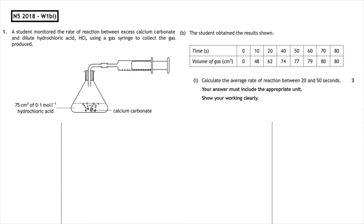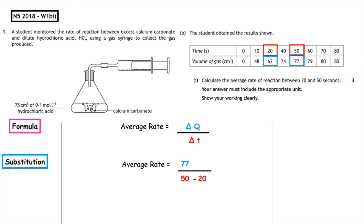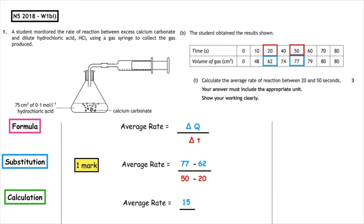This past paper question is from National 5, 2018, written 1B part one. Calculate the average rate of reaction between 20 and 50 seconds; your answer must include the appropriate unit and you must show your working clearly. We write out the formula: average rate is equal to change in quantity over change in time. The time intervals given are 20 and 50, so we write 50 minus 20. For that time interval the quantity values are 62 and 77, so we write 77 minus 62. That gets us one mark. 77 minus 62 gives us 15, and 50 minus 20 gives us 30. 15 divided by 30 gives us 0.5, which gives us our second mark.